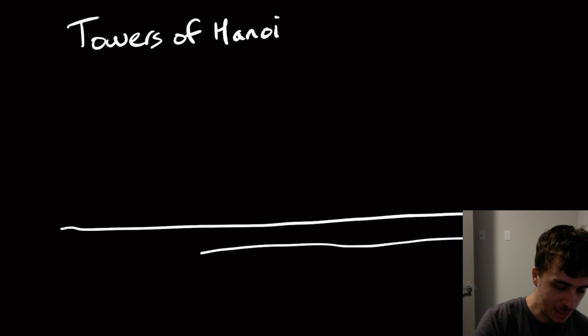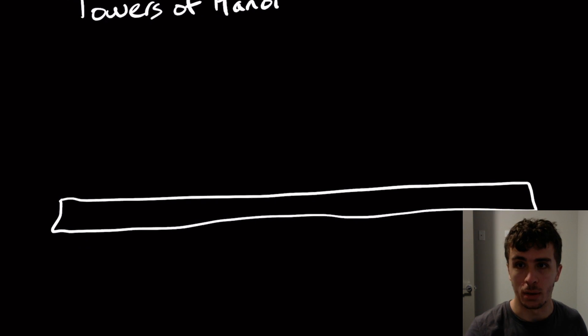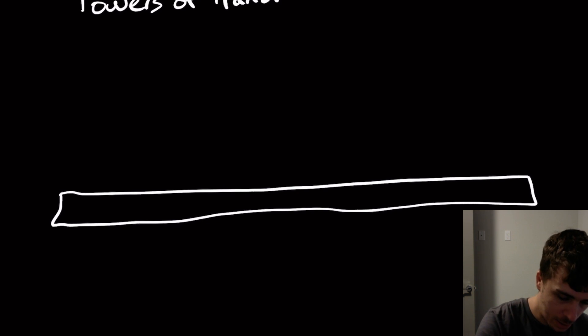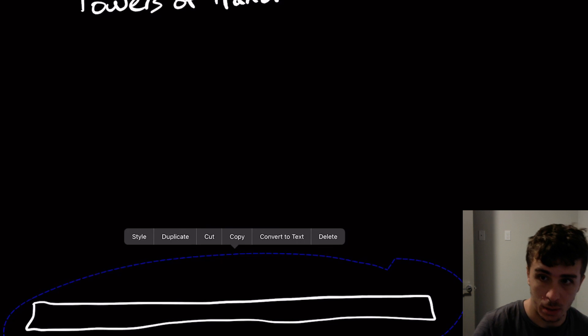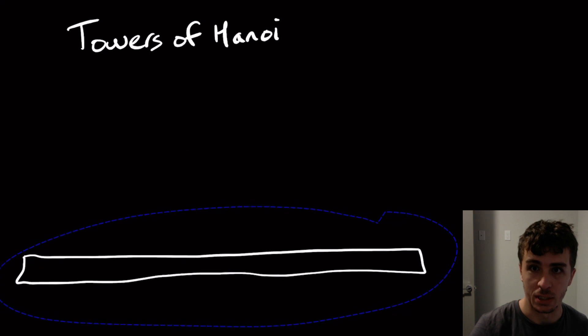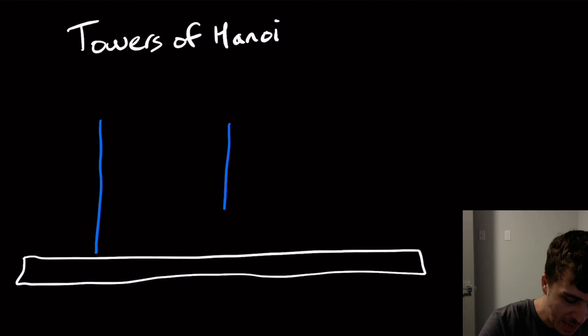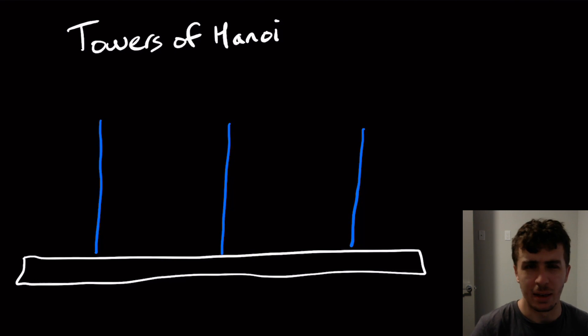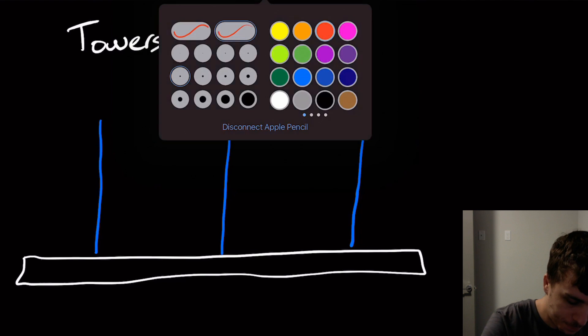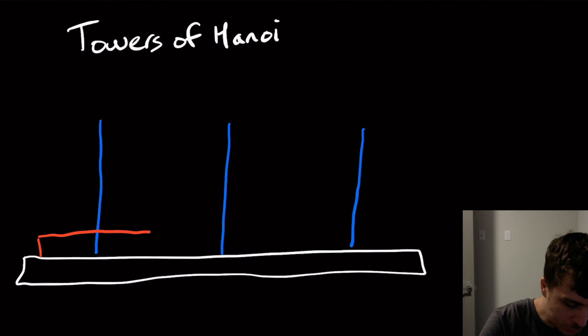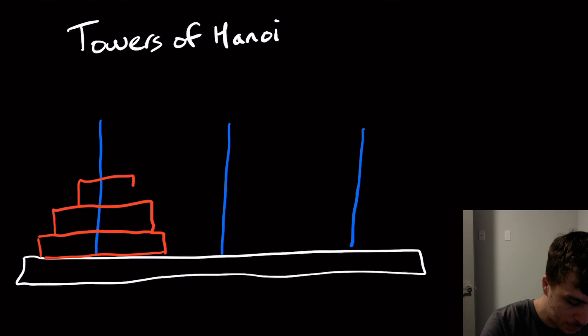A lot of you have probably heard this problem, but if you haven't, I'll explain it. So what we have are three different pegs right here. You could generalize it to more, but initially we have three. On one of the pegs, we have a bunch of disks — let's say we have four right here.